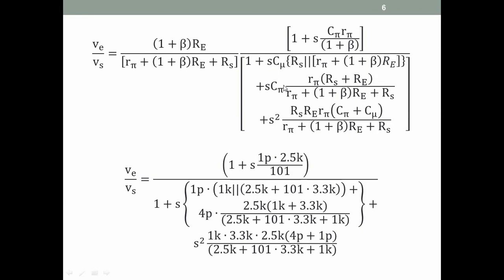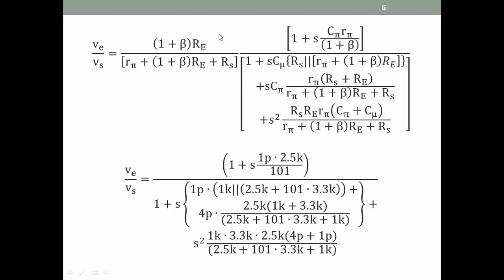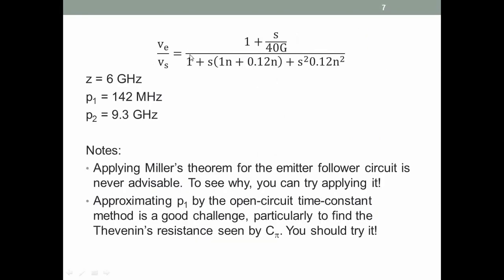If you put in all the values—I will put in all the values here—and we find the numericals, this is what we get. This is an emitter follower, so the midband gain is basically one, because rπ and Rs would be small compared to β·RE. In this expression, the midband gain is one, so it does not appear. One zero at 40 gigaradians, and two poles here—these are the time constants. If we evaluate, the dominant pole is at 142 MHz and the second pole is at 9.3 GHz.